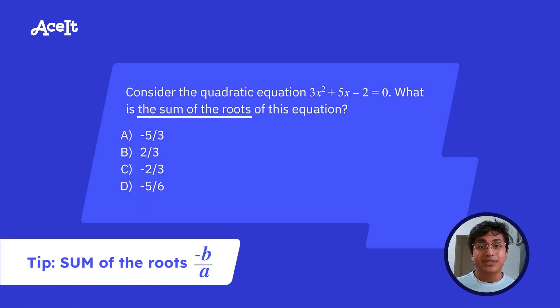So for these questions, a quick shortcut you can use is -B/A. So let's look at this quick example. We have 3x² + 5x - 2. So instead of using the quadratic equation or trying to factor it, we can simply take -B, or in this case -5, and put it over A, in this case 3. Meaning the answer would be A, -5/3.